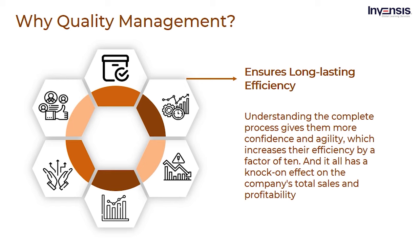Then, ensures long-lasting efficacy which increases profits. When we examine the importance of quality management, we must consider the working efficiency of the employees involved in product manufacture, the working efficiency of each employee of the company, and the types of machinery. Understanding the complete process gives them more confidence and agility, which increases their efficiency by a factor of 10. And it all has a knock-on effect on the company's total sales and profitability.